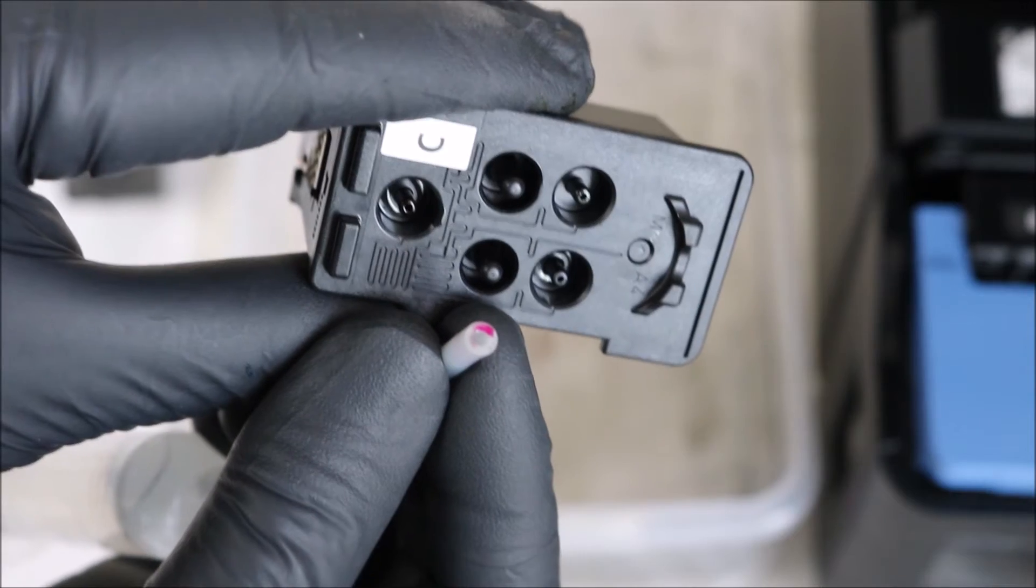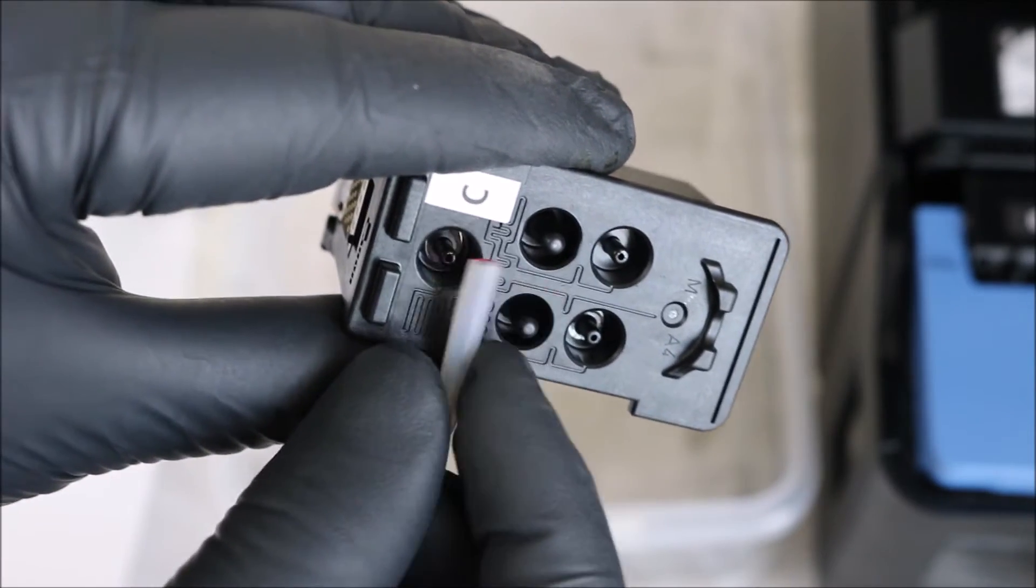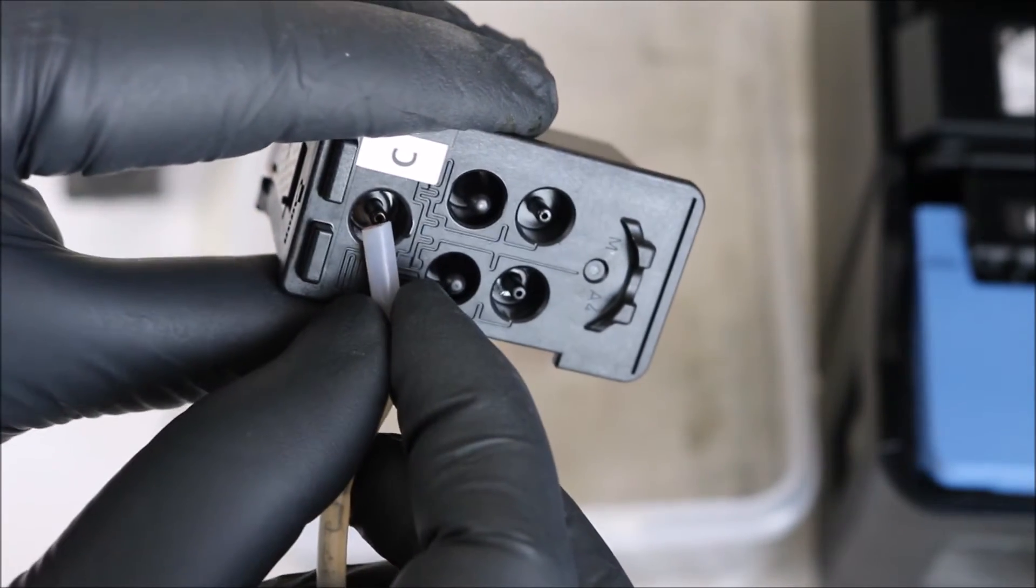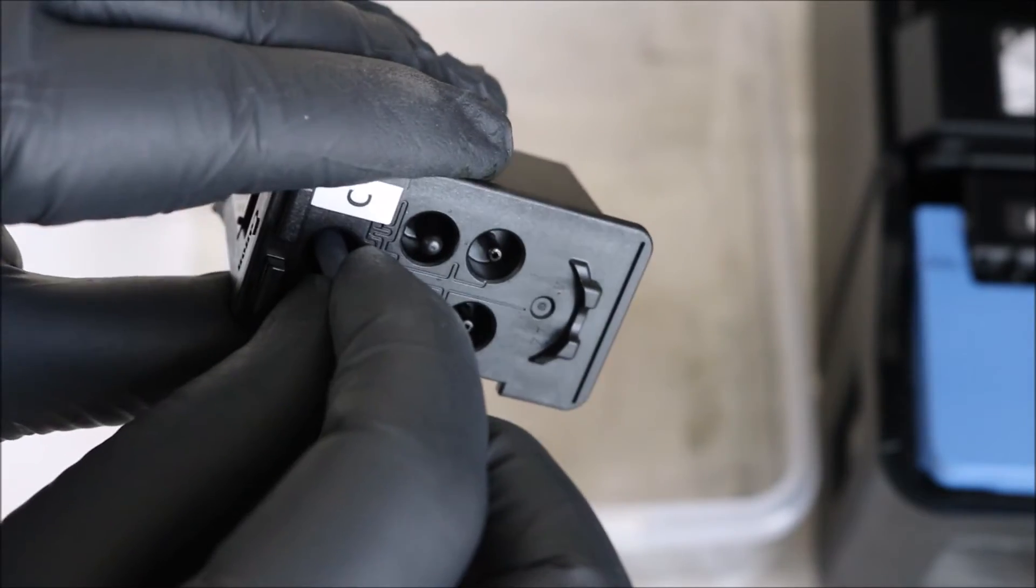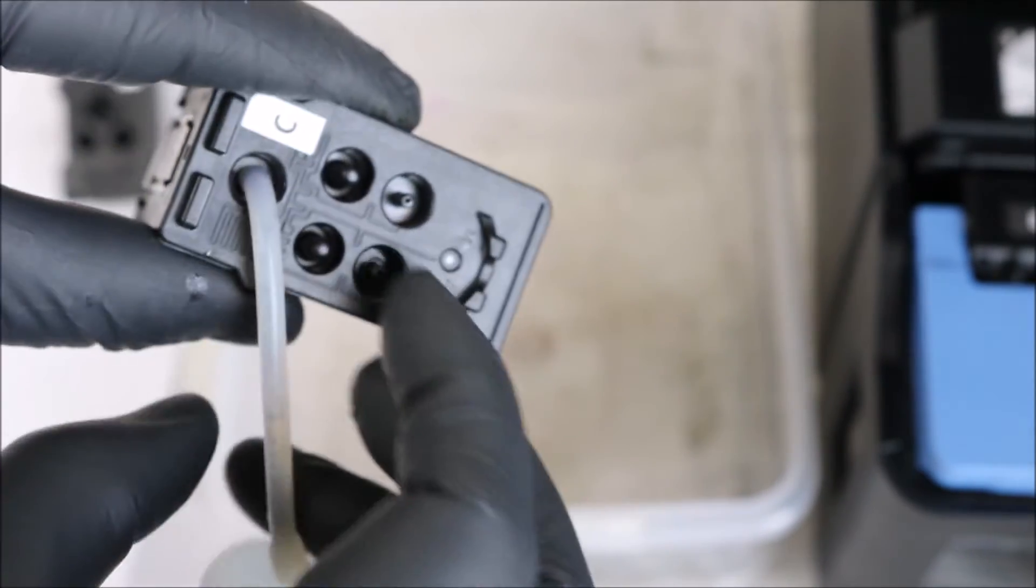So once you're able to determine the color, you're then going to put the tip of your syringe onto the nozzle of the print head. You see there I'm starting off with magenta.